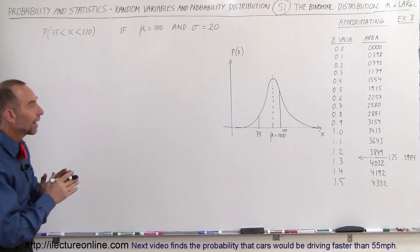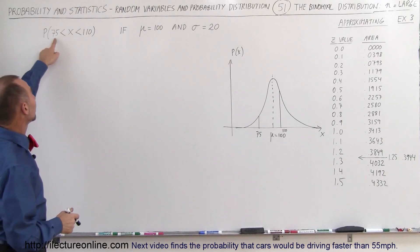Welcome to our lecture online and here we're going to find the probability that x is somewhere between 75 and 110.